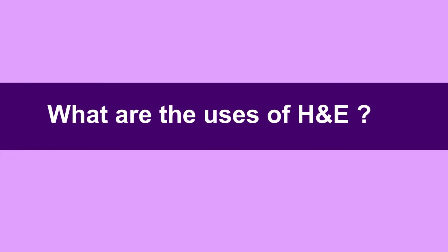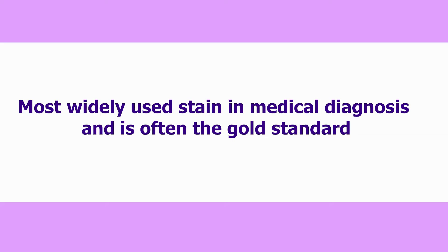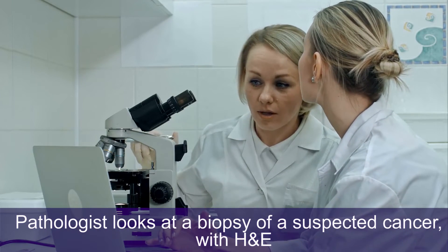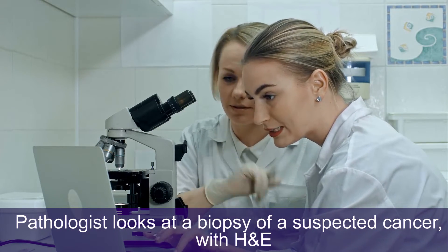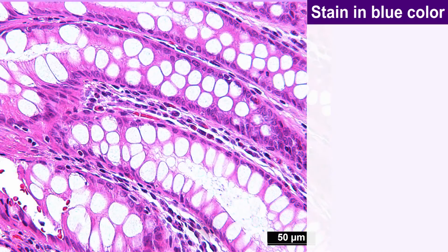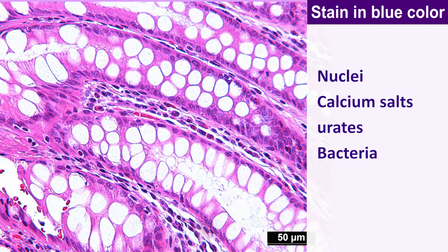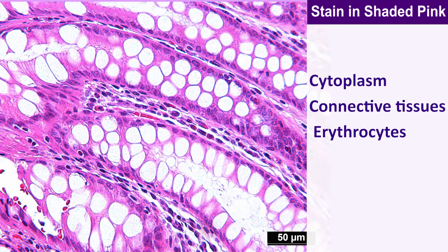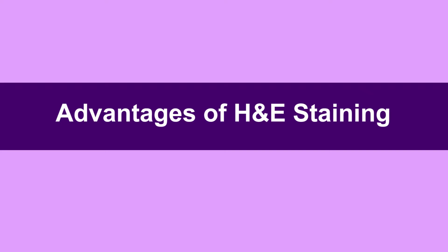The uses of hematoxylin and eosin staining: H&E is the most widely used stain in medical diagnosis and is often considered the gold standard. For example, when a pathologist looks at a biopsy of suspected cancer. With H&E stain, nuclei, calcium salts, urates, and bacteria stain in blue color, while cytoplasm, connective tissue, and collagen stain in shades of pink.